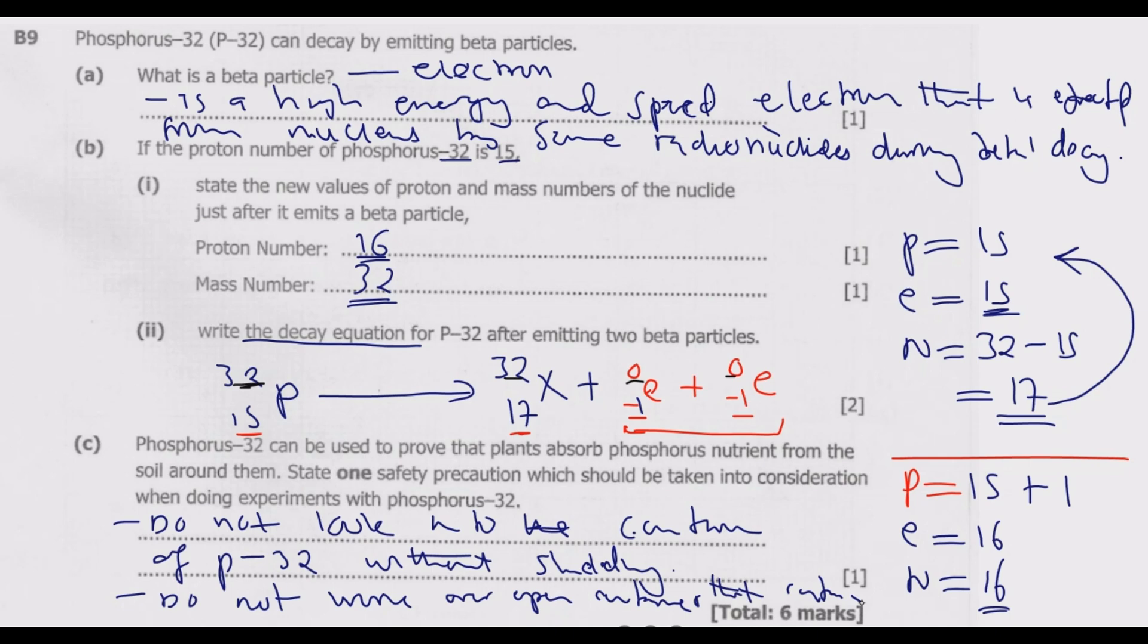Don't open that container or look into it without shielding. You need to be protected as these are dangerous radioactive substances. Once you do this, you get the six marks. Thank you for joining me in this episode. Please join me next episode as we start looking at section C of this paper.